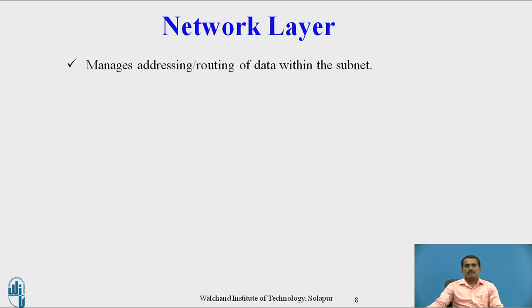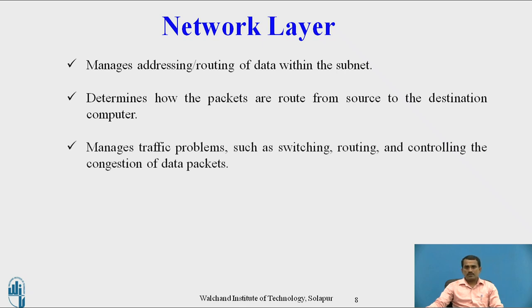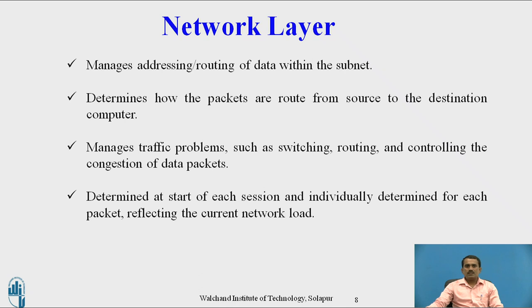The network layer handles addressing and routing of data within the subnet. It determines how packets are routed from source to destination computer, and manages traffic problems such as switching, routing, and controlling congestion of data packets. At the start of each session, routing is individually determined for each packet reflecting the current network load — the user checks the availability of the network while transmitting data.